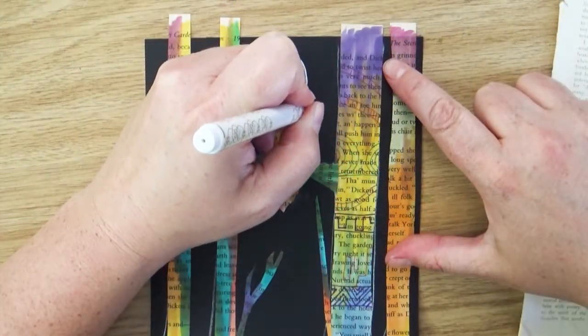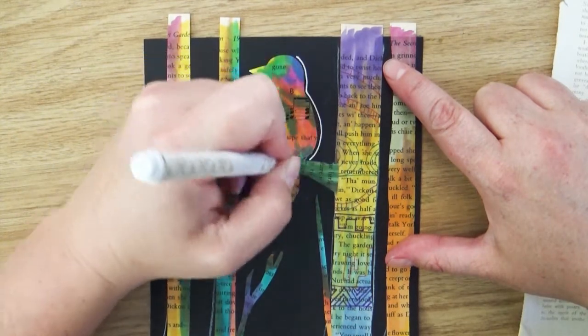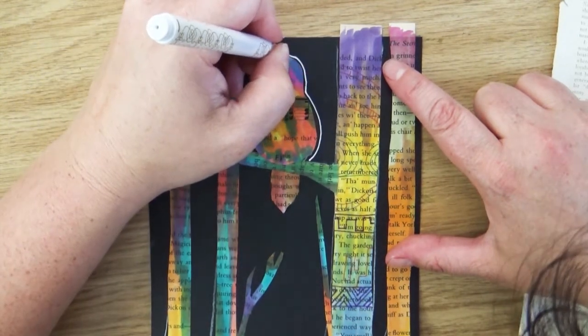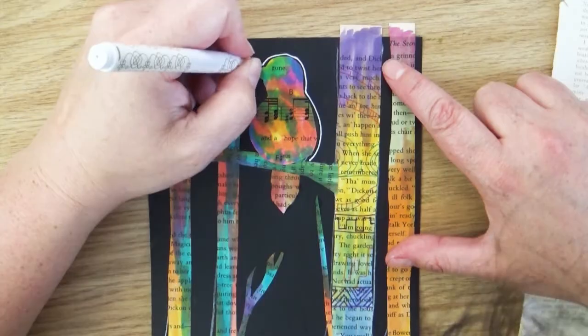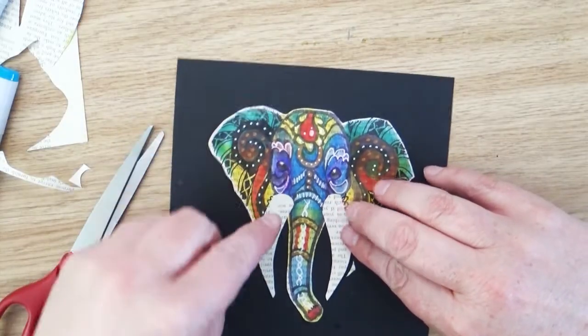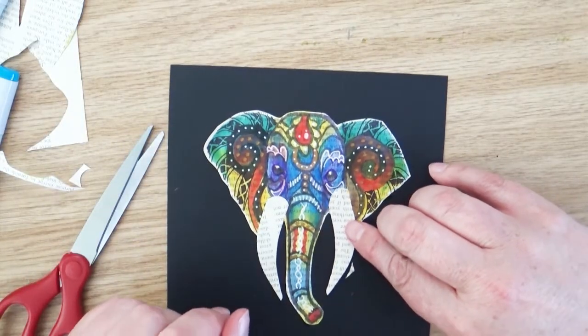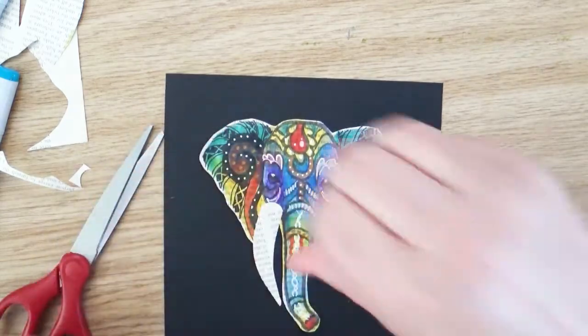Once everything's dry, you can finish up your artwork by adding some embellishments. That's where I use my gel pens and my metallic pens to add a little bit more interest. There are so many things that you can add and do to these pieces to really make them special. Hopefully this will give you a good starting off point.